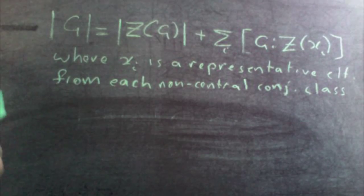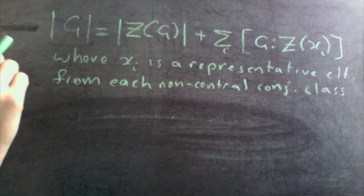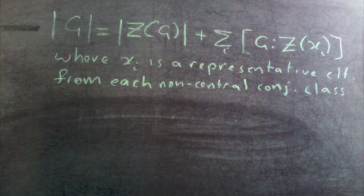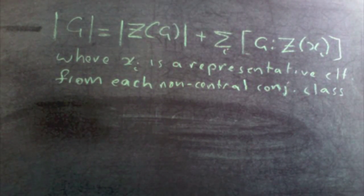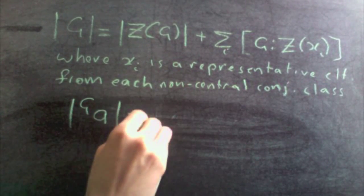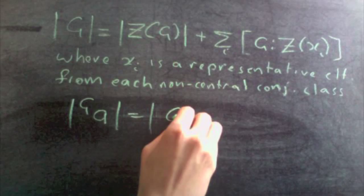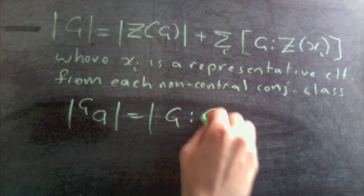In case you're wondering why sometimes you'll see the equation written like this, for instance on Wikipedia, it's nothing different, it's the same thing. By the orbit stabilizer theorem the size of the conjugacy class of a is equal to the index of the stabilizer of a which under the action of conjugation is just the centralizer in g.